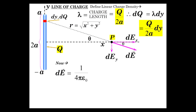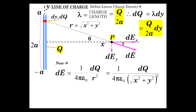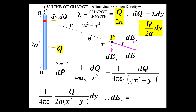The differential electric field is k times dQ over r squared, which is 1 over 4 pi epsilon-zero times dQ over (x squared plus y squared). This becomes (Q over 2a) times dy over (x squared plus y squared). Now dE in the x direction — the horizontal component — is that value times cosine of theta. The cosine of theta is adjacent over hypotenuse: x over r, and r is the square root of x squared plus y squared.